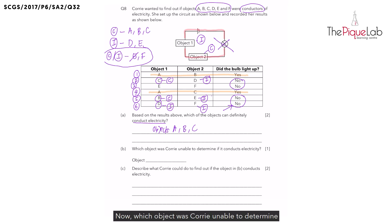Now which object was Corrie unable to determine if it conducts electricity? Remember, that was object F. Now describe what Corrie could do to find out if the object in B, which means object F here, conducts electricity.